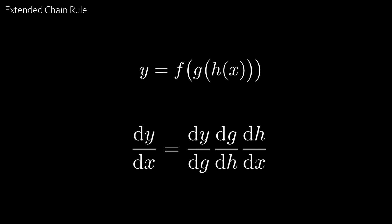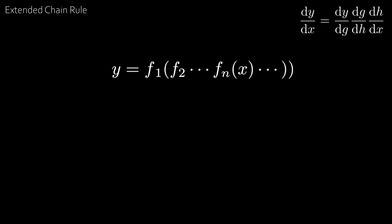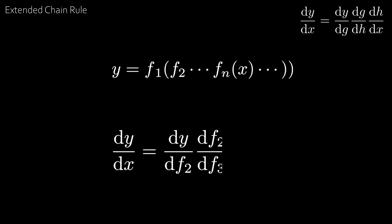This almost makes intuitive sense because, like normal fractions, the dg's would cancel and the dh's would cancel, leaving dy by dx. And if we had y equal to f1 of f2 of ... fn of x — that is the composition of n functions — then dy by dx is equal to dy by df2 times df2 by df3, all the way to dfn by dx. Again, we see that all the intermediate terms cancel out, giving dy by dx.